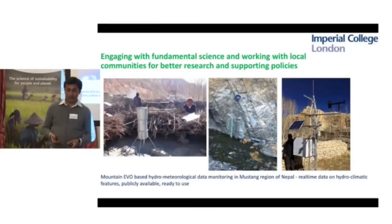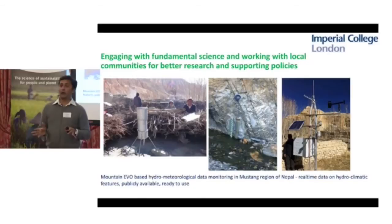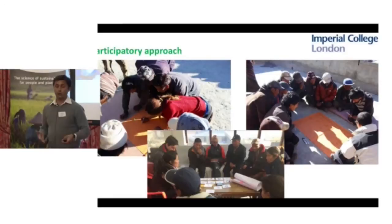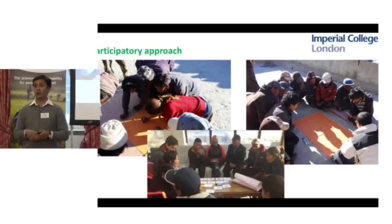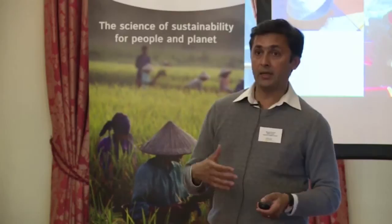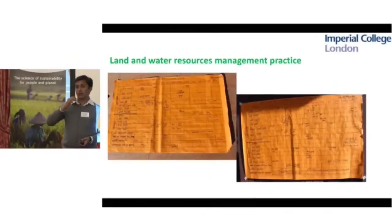Here are some examples of how we mobilize local communities to collect datasets — for example, rain gauges, river flow, and various hydro-meteorological data. We also conduct locally based participatory approaches, discussing with community people and various stakeholders, listening to how they understand their natural environment and how their social environment is changing over time. From their knowledge and perception we can better understand mountain ecosystem services and their uses for local development.